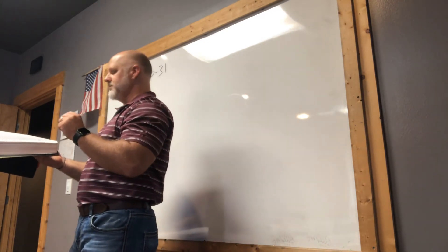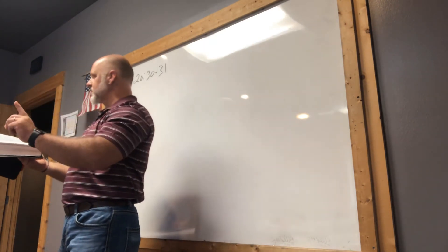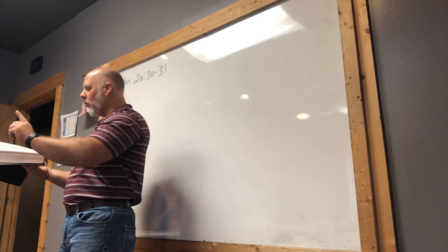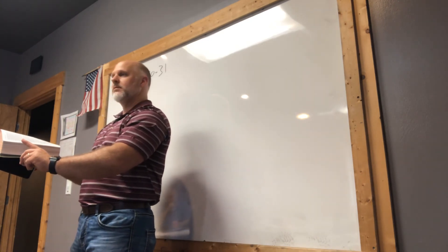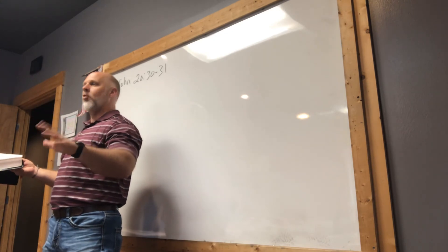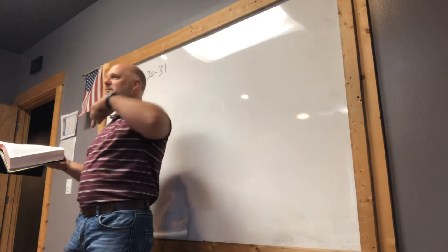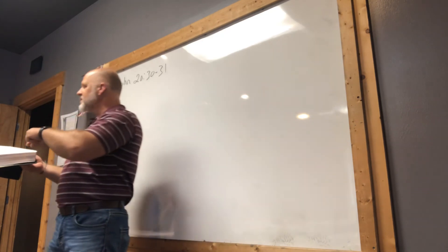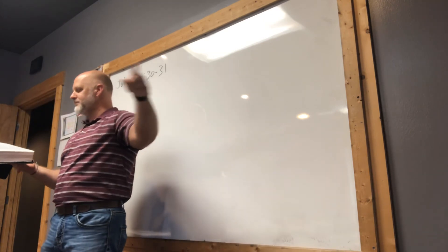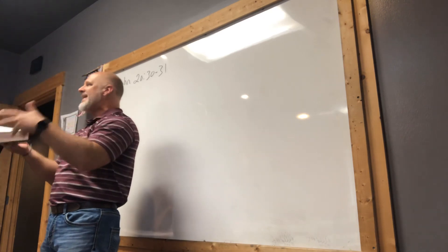He writes so that people would see these signs and miracles and believe. Now he gets specific. He talks about which Jesus he wants them to believe in. He says that they would believe that Jesus is, number one, the Christ. The anointed one, the one sent by God. Here is a man who came and he is king.